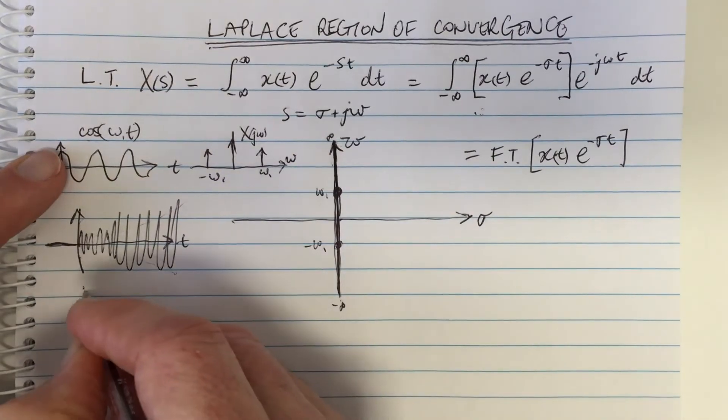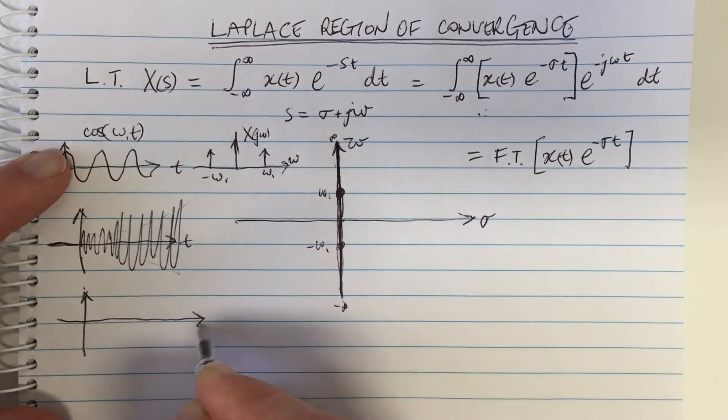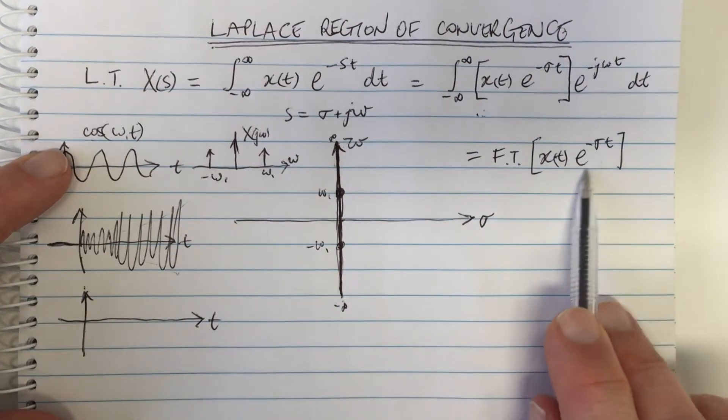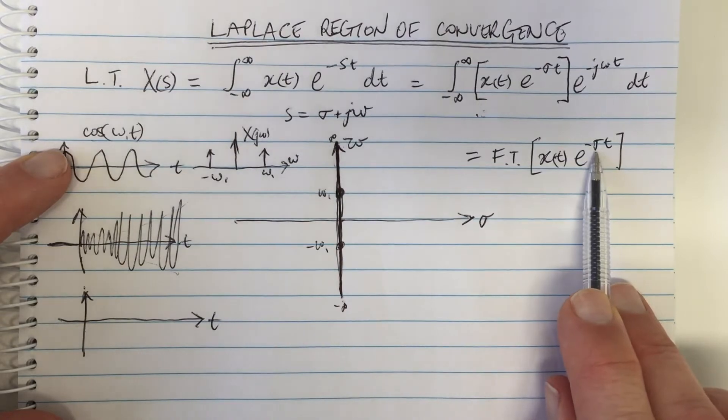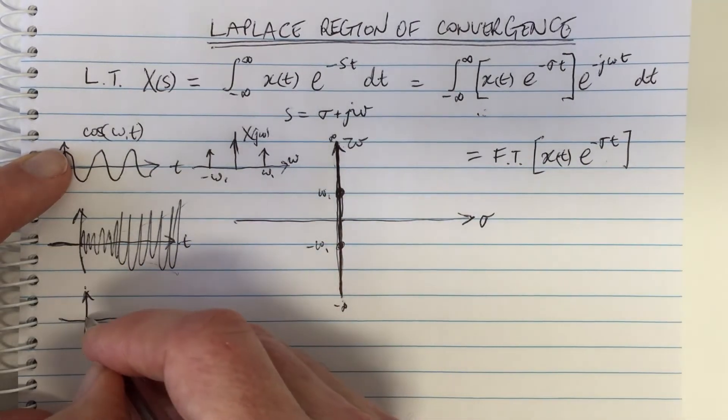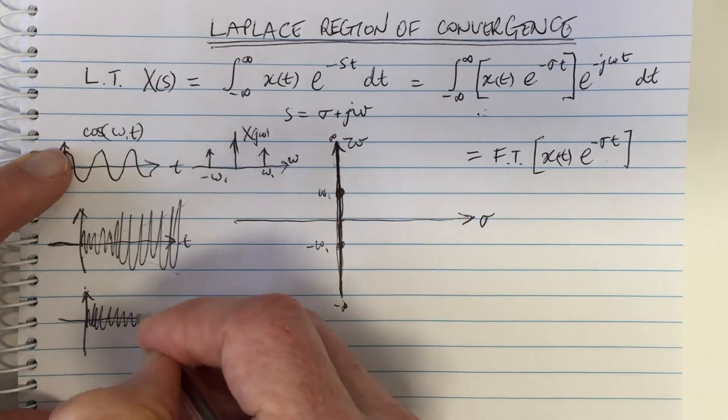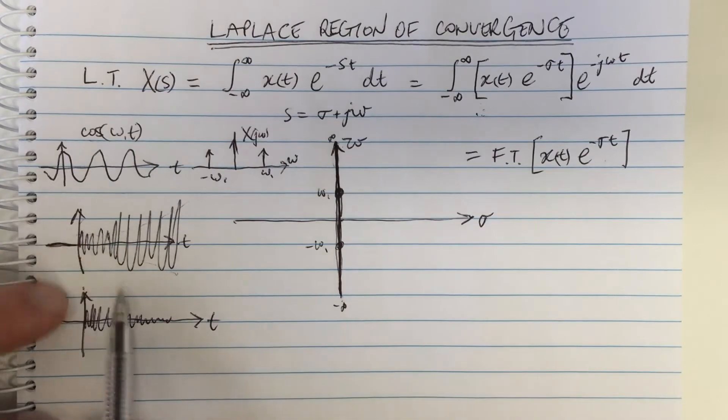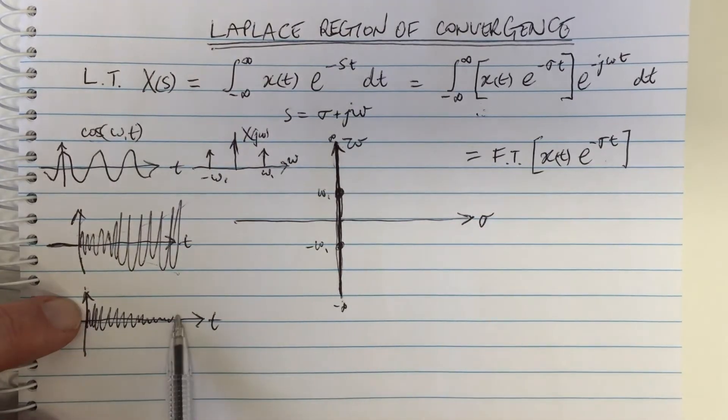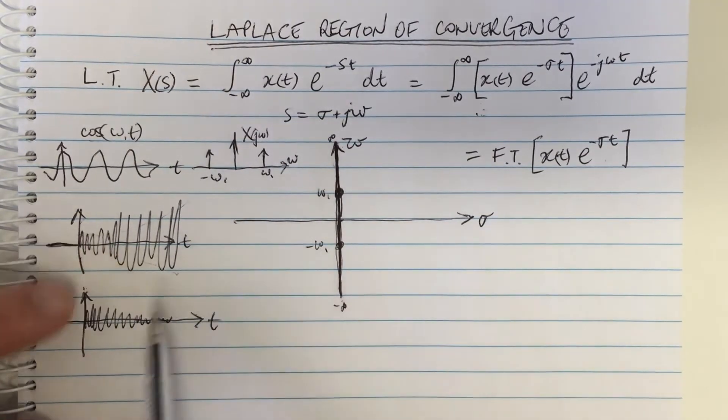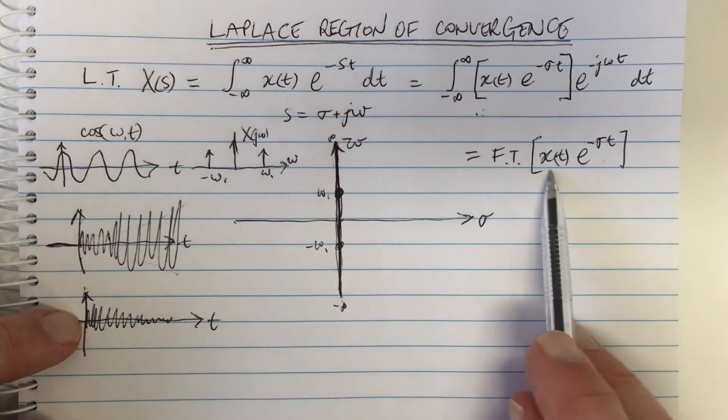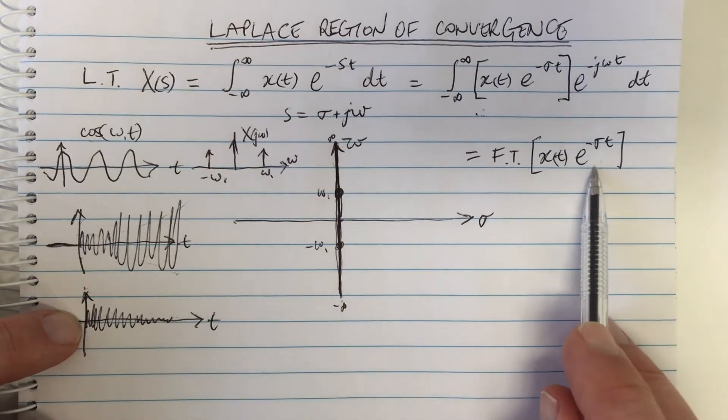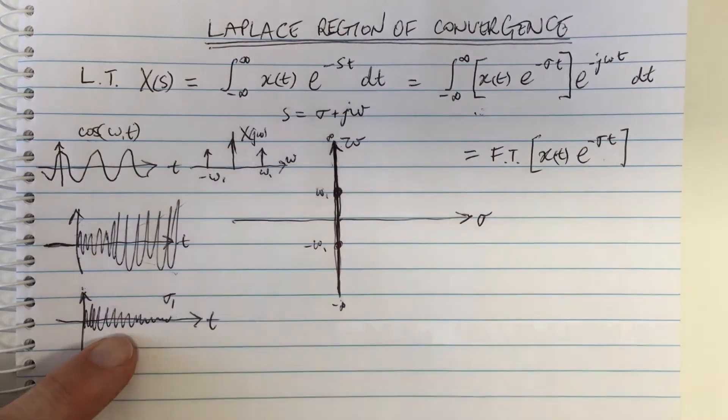But what we could do is we could multiply it by a negative exponential, which is what we're doing over here. And so if we picked a value of sigma we could multiply this by a negative exponential and we would get something that would look like this. So although this, as long as the exponential was at a bigger negative rate, then this one is at a positive rate, then the signal, the resultant signal of multiplying the two will get smaller over time. And that's what we're doing over here. And what does that mean? This would be for a value of sigma.